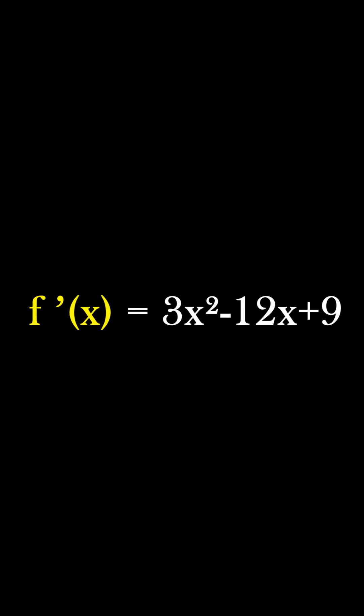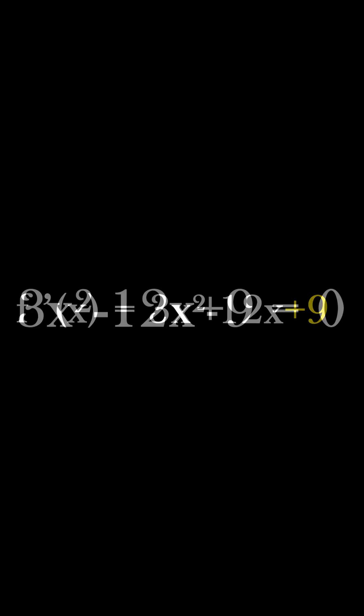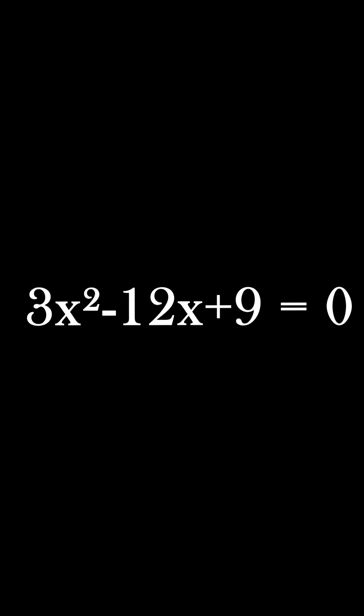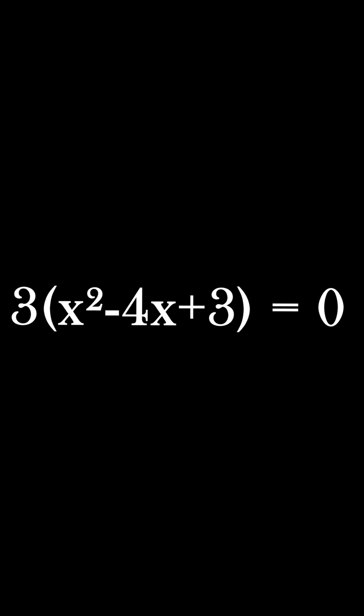Alright, our new equation is 3x squared minus 12x plus 9. We set this equal to zero and solve for x. We can factor out 3 to get 3 times x squared minus 4x plus 3.